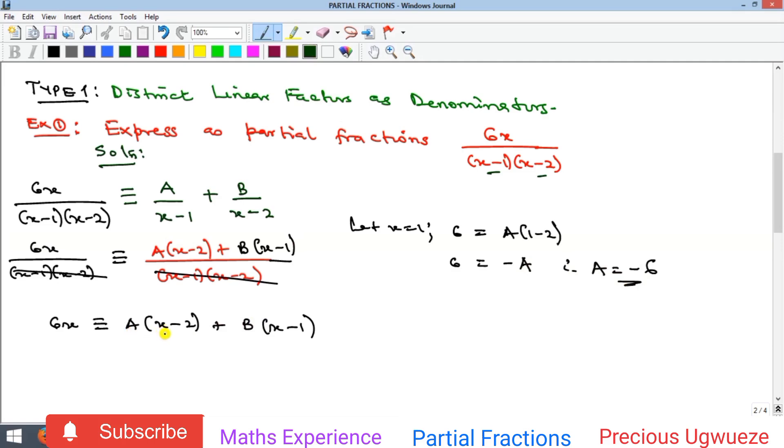Let x equal 2. That's going to give me 2 times 6, which is 12, and that equals—if you put 2 here, you're going to get zero. So I'm going to have only B, which is B times (2 minus 1).